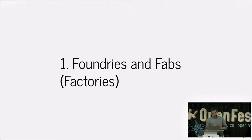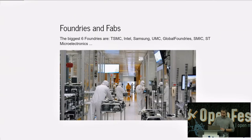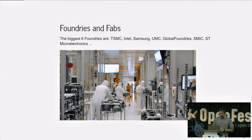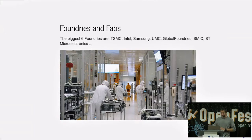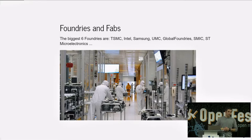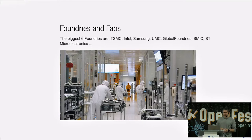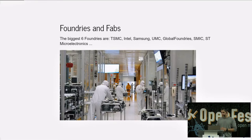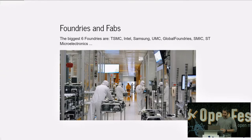Let's look at how fabs work. Foundries are the companies responsible for manufacturing your design. They can have multiple fabs spread across different locations or focused in one place. Fabs provide so-called PDKs — process design kits — which describe their process and which designers use to create their designs. The biggest foundries in the world are TSMC, Intel, Samsung, UMC, Global Foundries, SMIC, and ST Microelectronics.